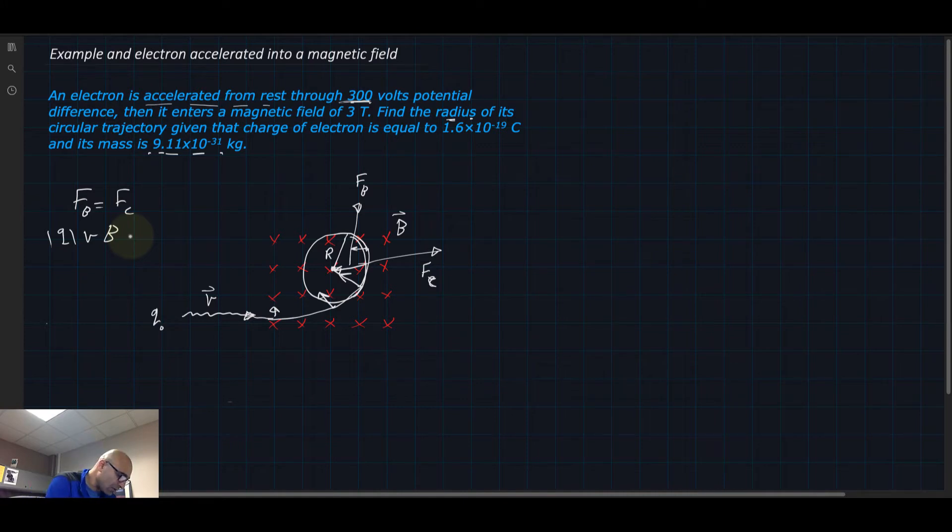Sine 90 is 1. F_C here is the mass times the velocity squared divided by the radius. Now the square of the velocity with the velocity on the left hand side goes away.